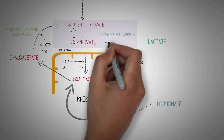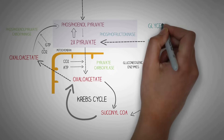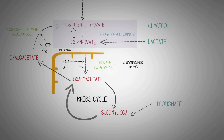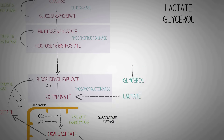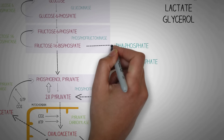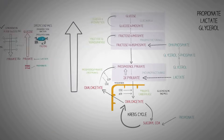Lactate is converted directly into pyruvate by the enzyme lactate dehydrogenase. Glycerol, which is derived from fat tissue, is first converted to glycerol-3-phosphate, which is then converted to dihydroxyacetone phosphate. Dihydroxyacetone phosphate can then be converted to fructose-1,6-bisphosphate through the reactions of glycolysis.